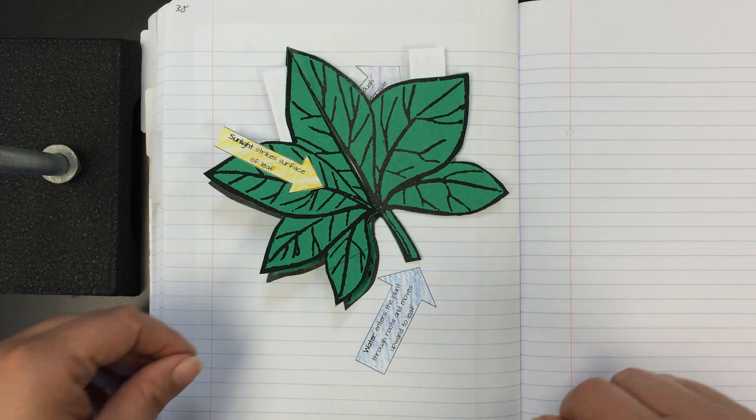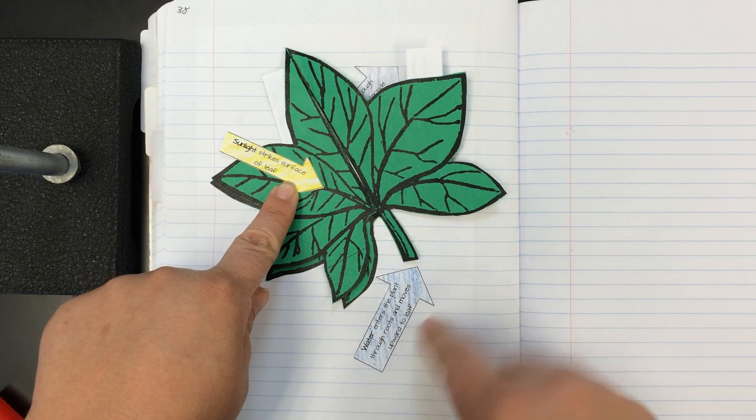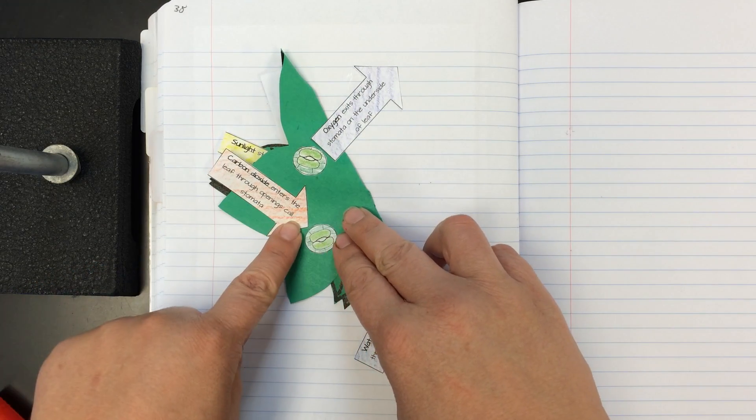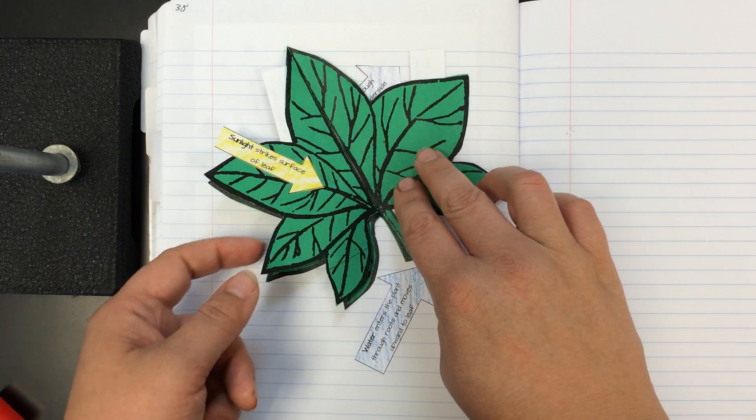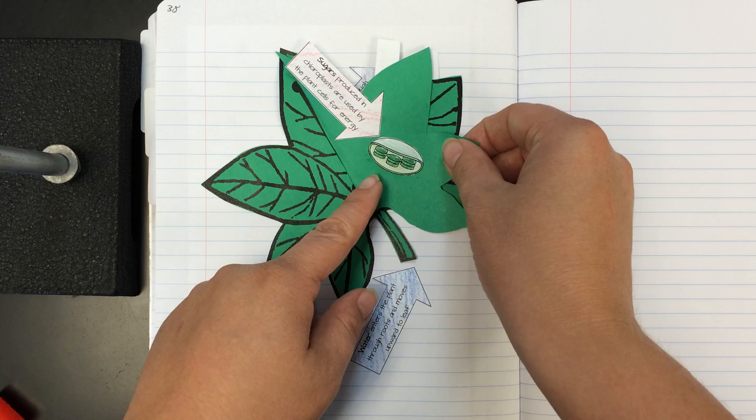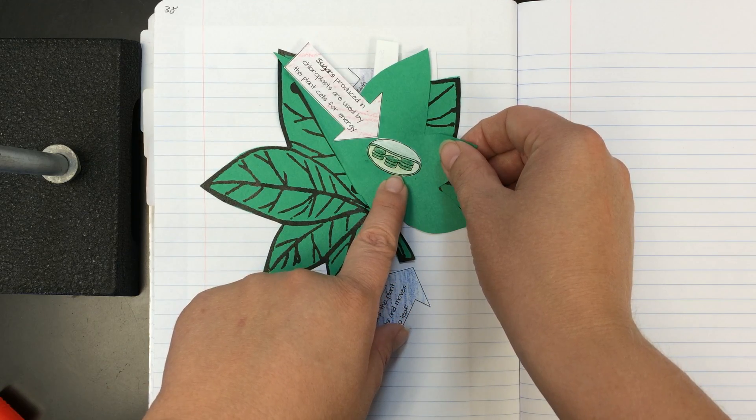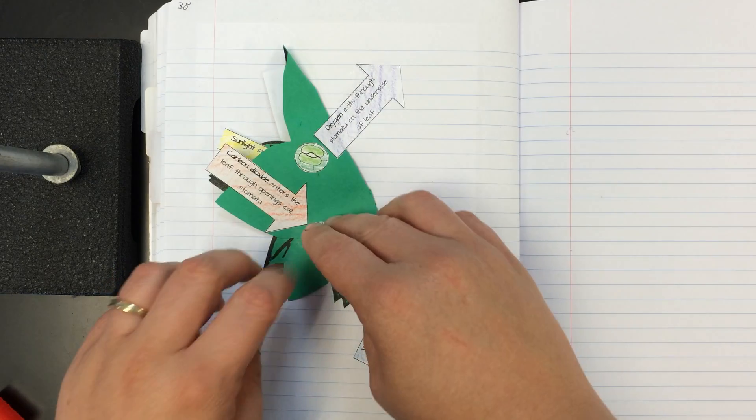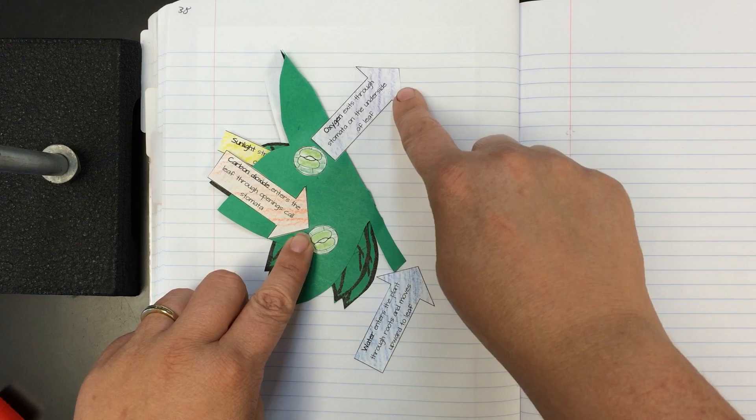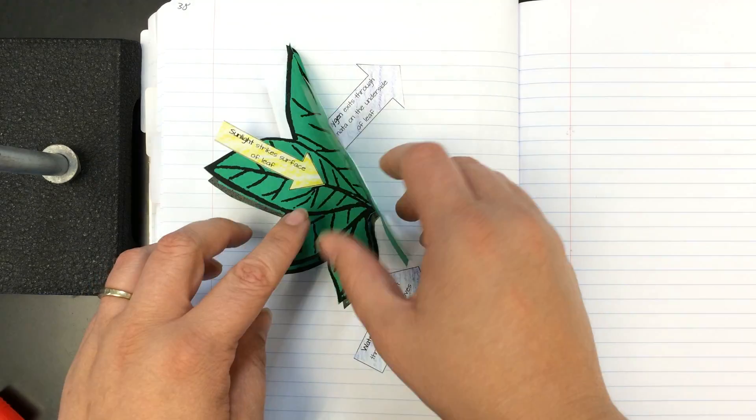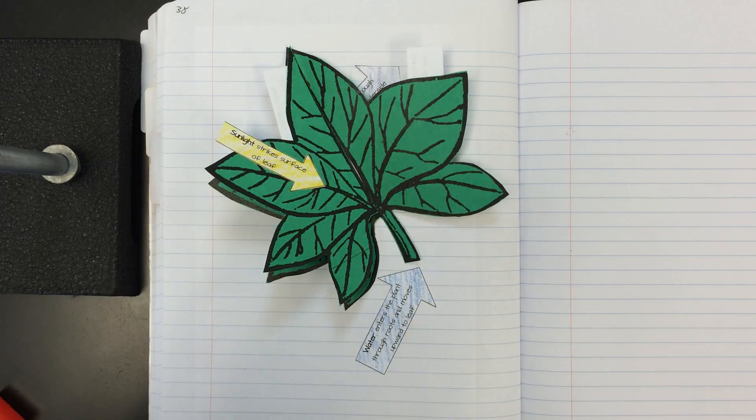So there you have it. Water comes in through the bottom of the plant. Sunlight strikes the surface, and we also have carbon dioxide entering through the openings called stomata. That process triggers photosynthesis, which lets sugars be produced in chloroplasts for plants to use for energy. And finally, we'll have oxygen exiting the stomata on the underside of the leaf. And that is the very basis of photosynthesis and how to make the leaf foldable. Thank you!